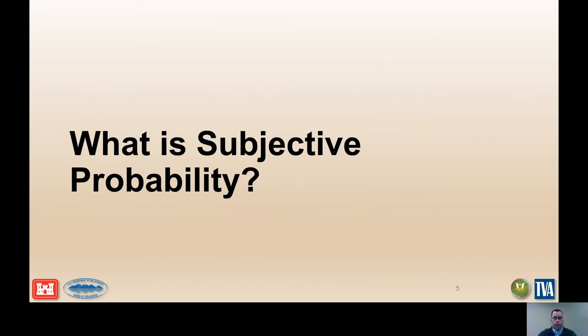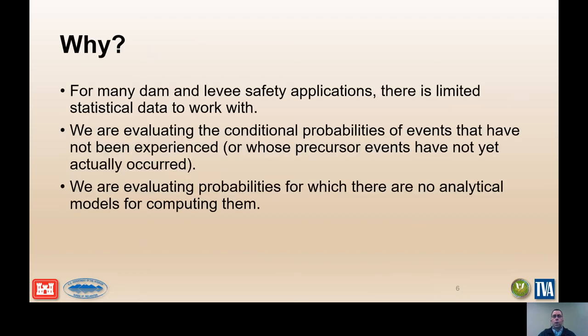So what is subjective probability? A subjective probability estimate is the numerical value or range of values judged to be believable based upon the available evidence. Subjective probability estimates are typically made to represent the likelihood of each event for a potential failure mode that has been decomposed for event tree analysis.